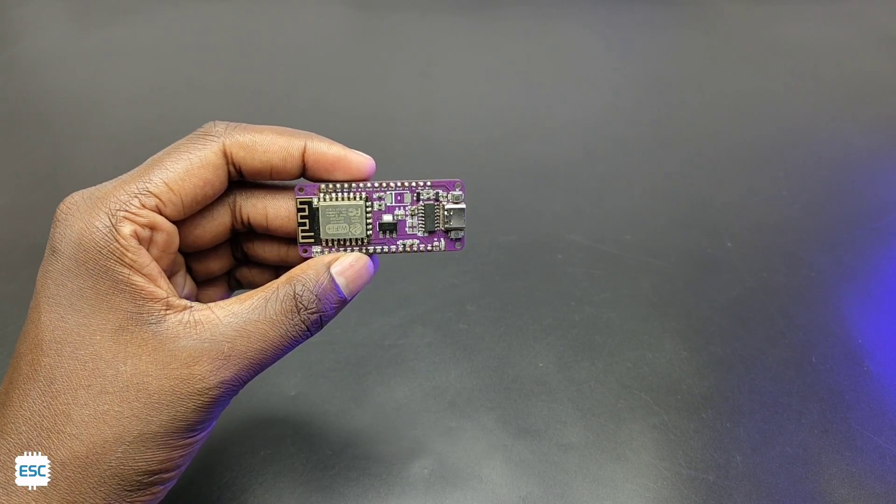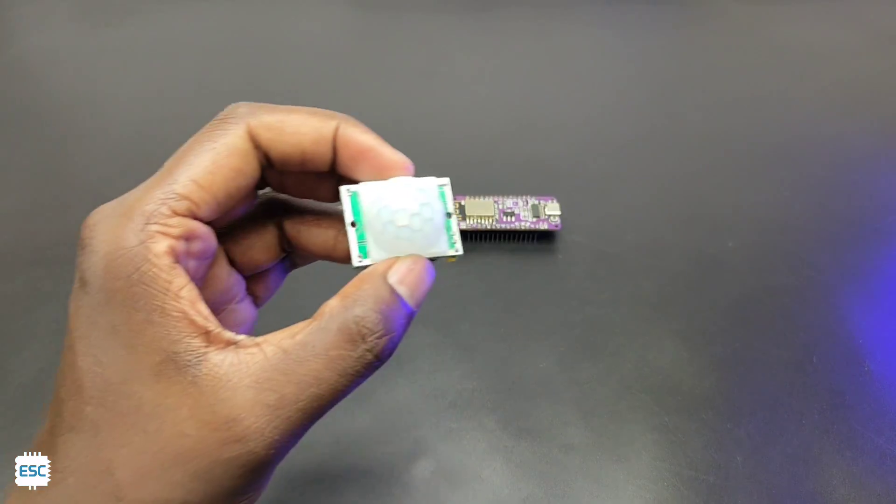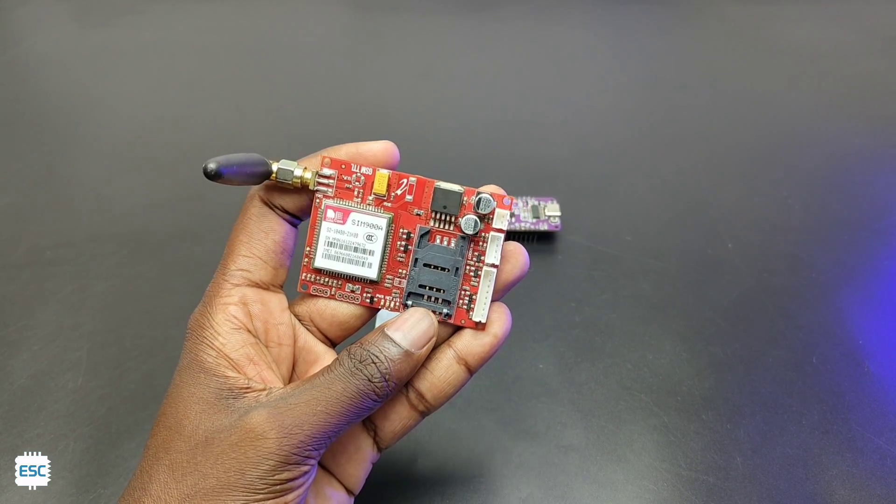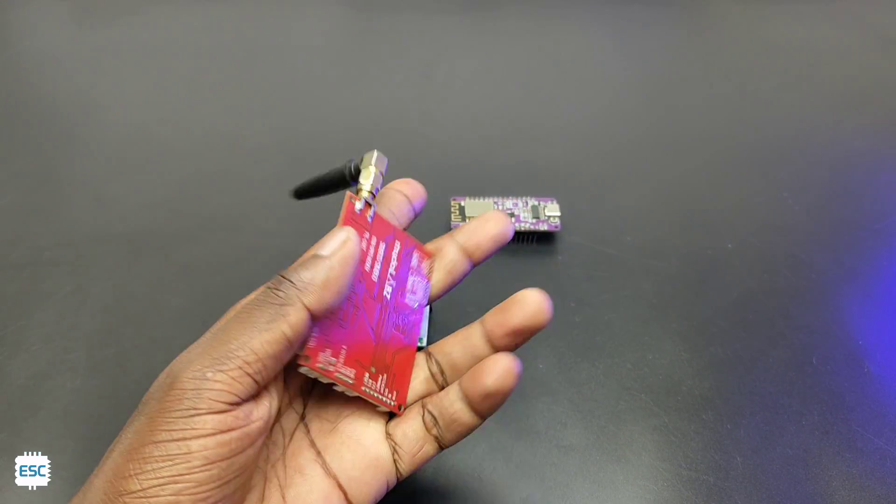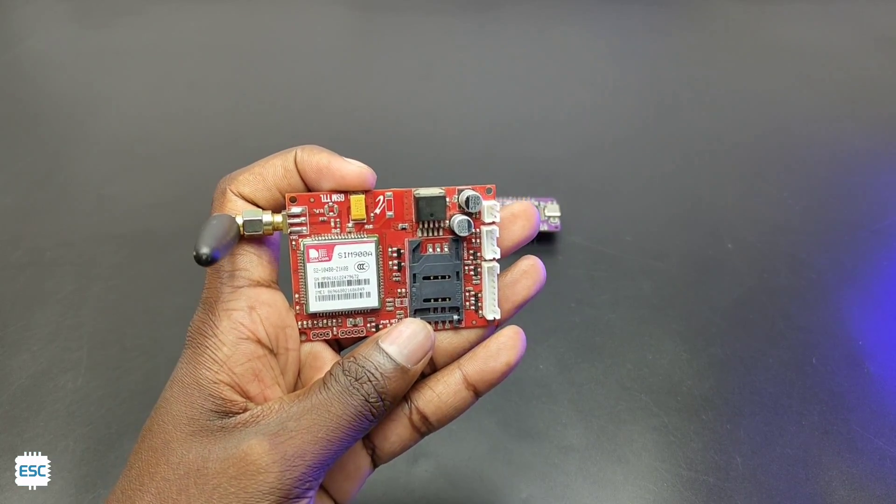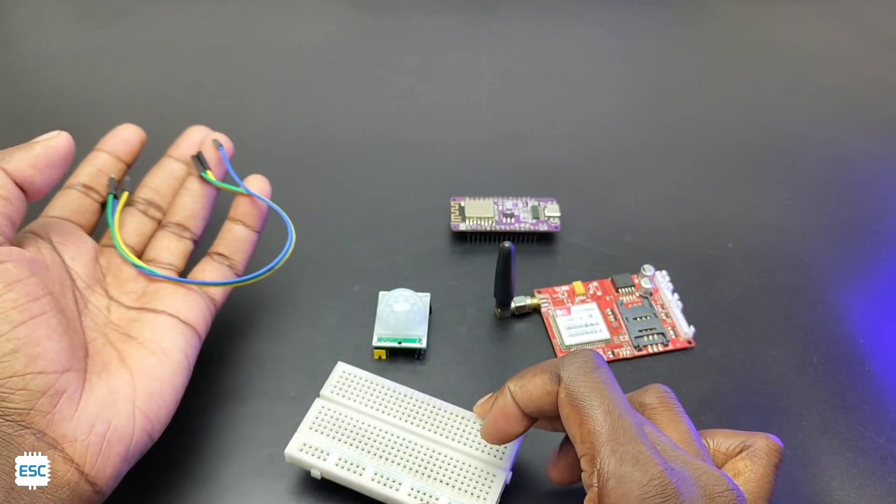To make this we need an ESP8266, you can use any ESP, then a PIR or motion sensor. Next the SIM900 module, you can use any kind of SIM module, commands and workings are same for all. Finally, we need some wires and a breadboard.